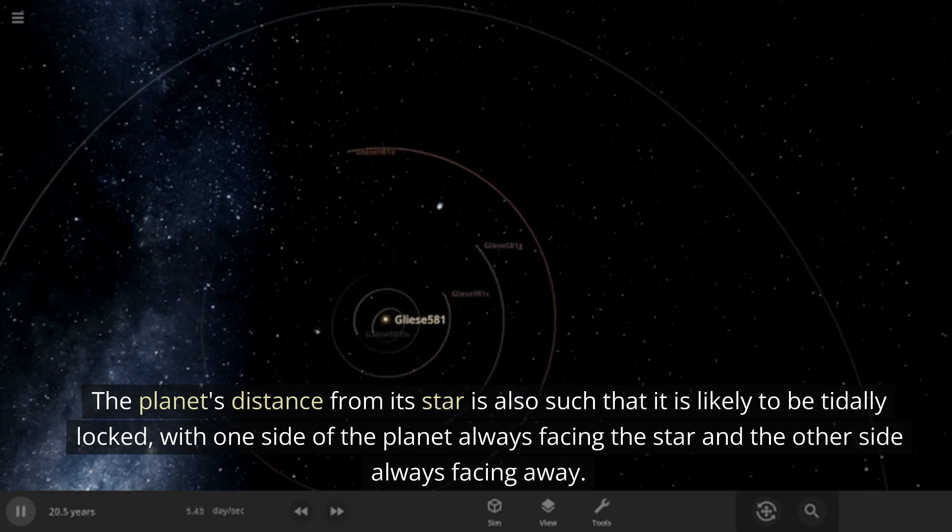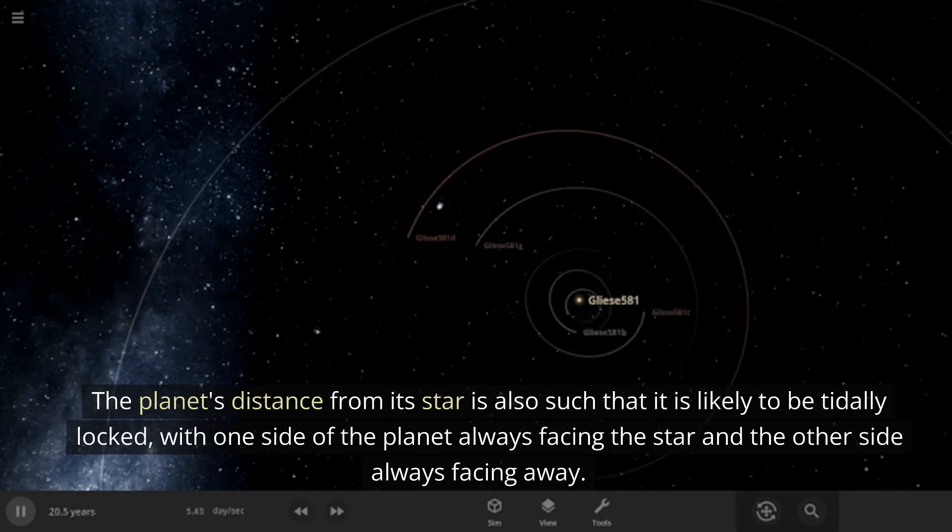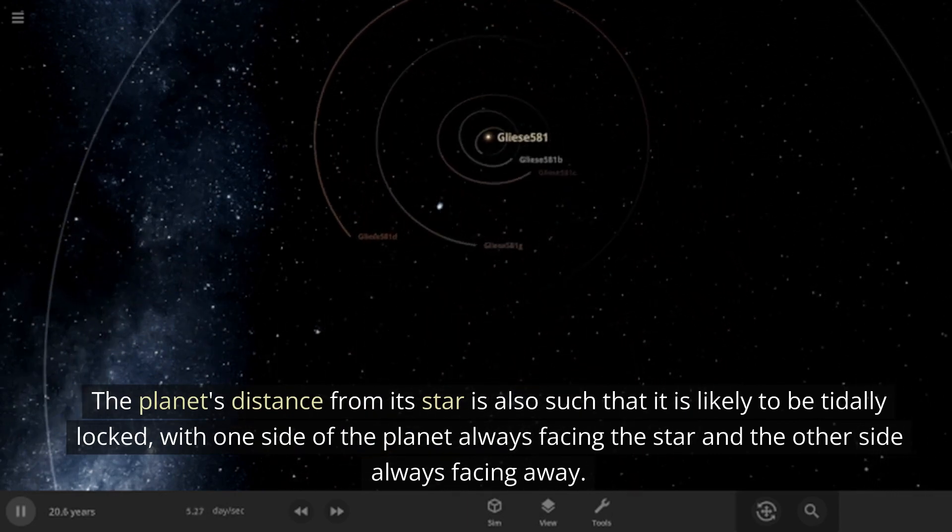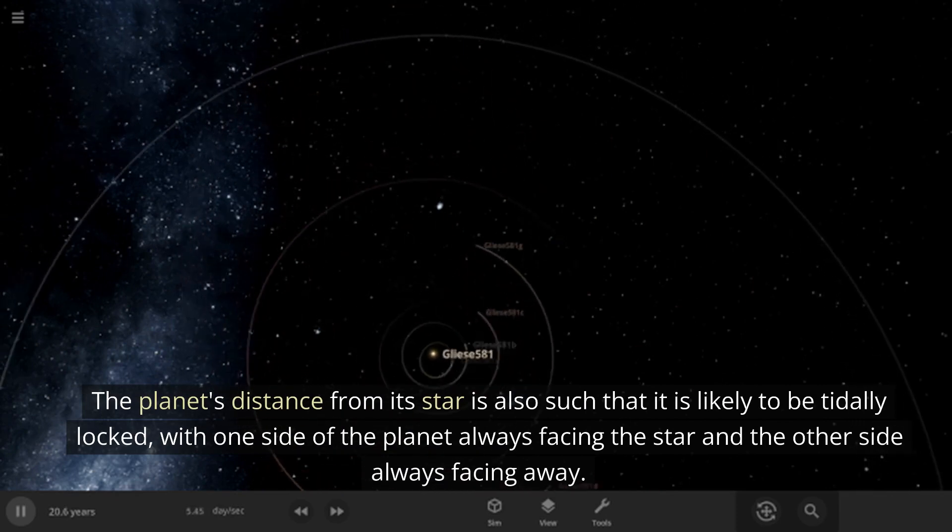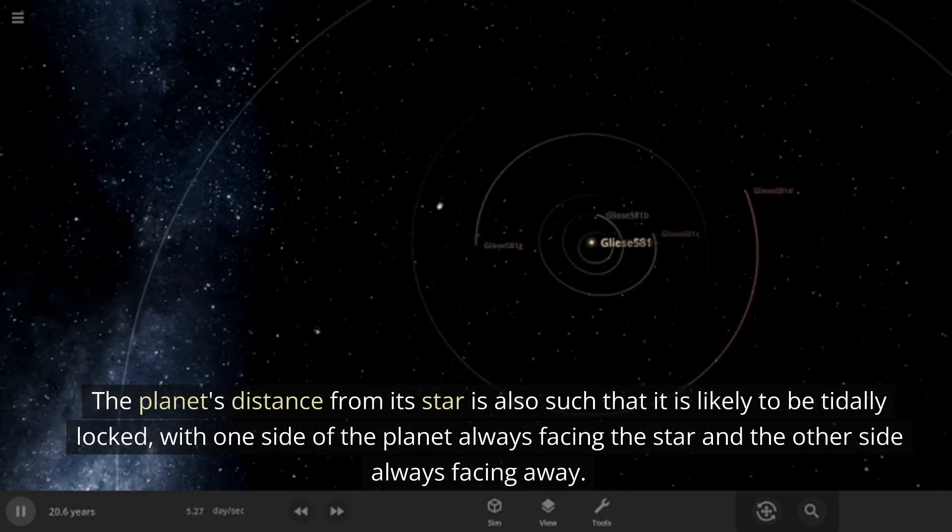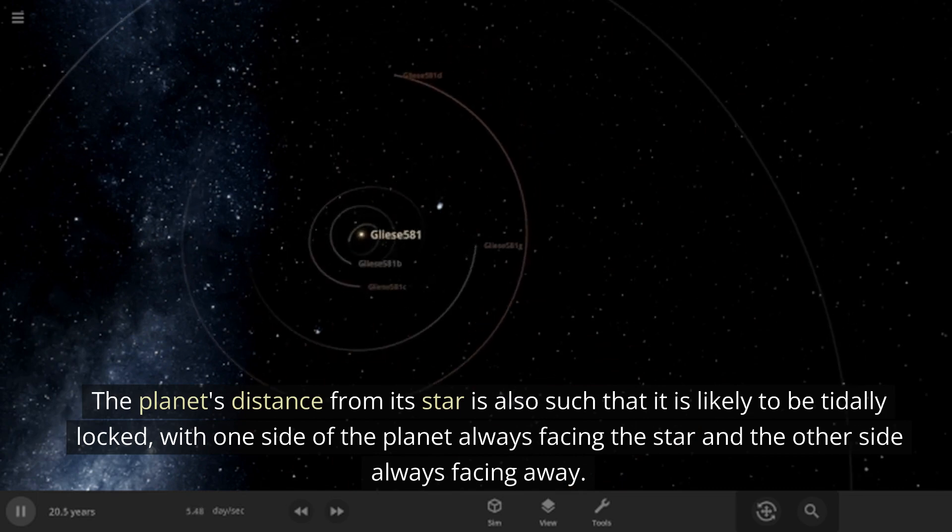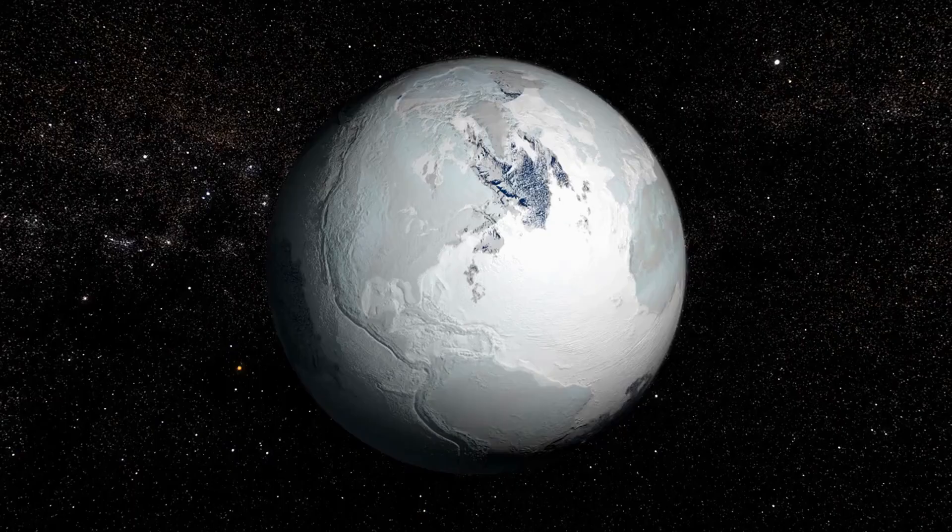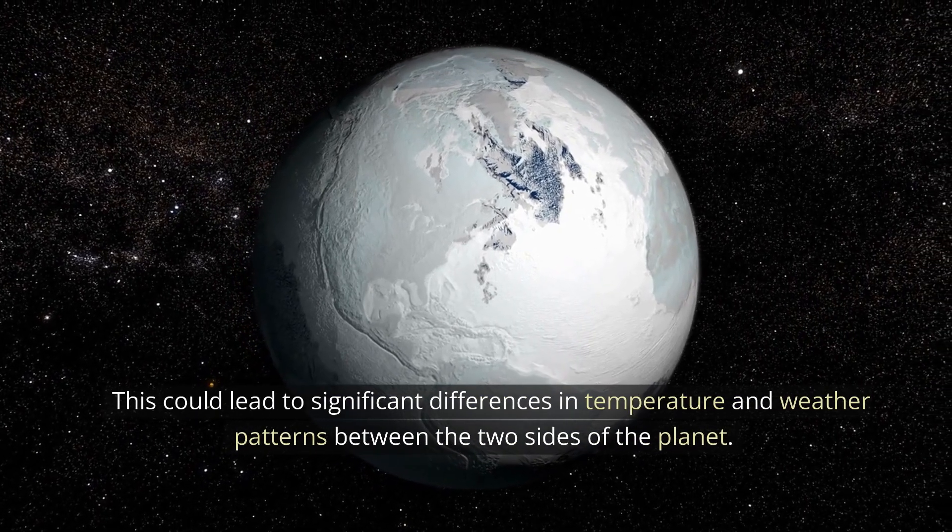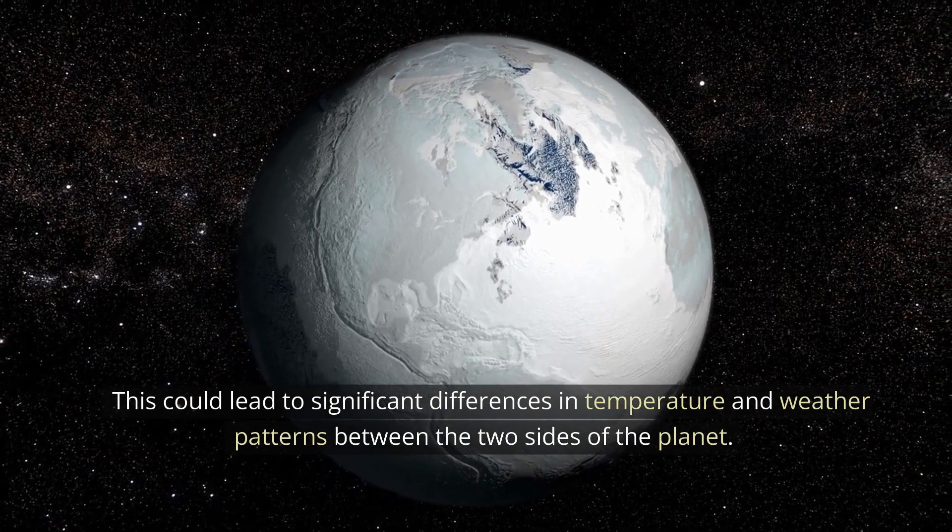The planet's distance from its star is also such that it is likely to be tidally locked, with one side of the planet always facing the star and the other side always facing away. This could lead to significant differences in temperature and weather patterns between the two sides of the planet.